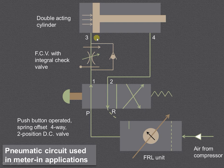As the air entering the cylinder is controlled, it is known as meter-in application. The air from the other side can easily go from port 4 to 2, and from 2 to R, which is the atmosphere.